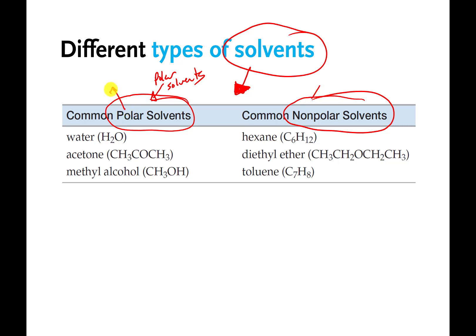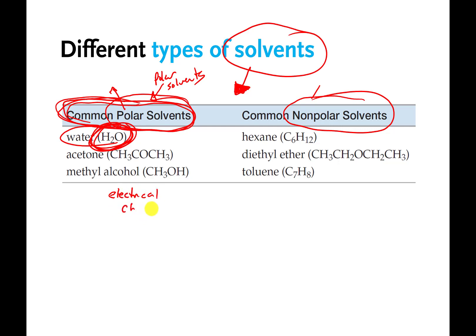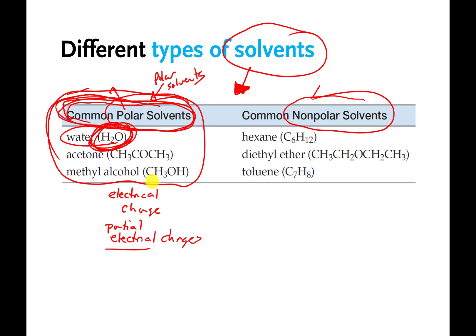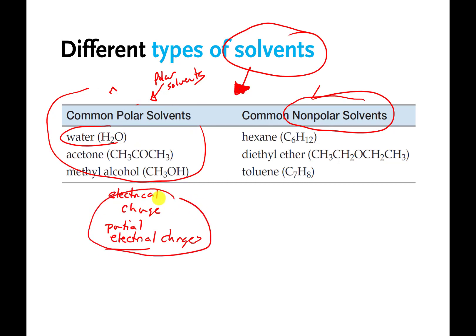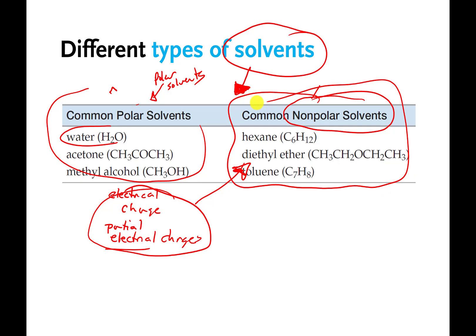What this really means is that there are little electrical poles on different areas of these kinds of liquids, and those little electrical poles like to be attracted to the little electrical poles on water molecules. Things that are charged or have partial electrical charges tend to be good at dissolving in other liquids that also have partial electrical charges — that's basically what polar means. And things with electrical charges are usually horrible at dissolving in things that don't have these electrical charges, while things without electrical charges are generally good at dissolving in nonpolar materials.